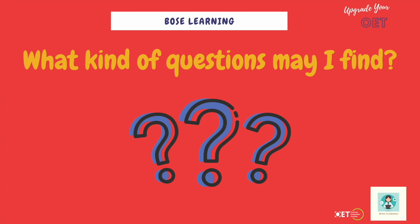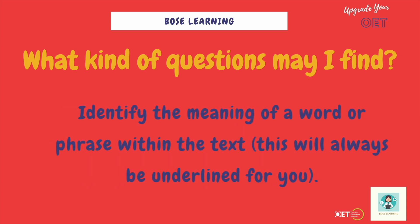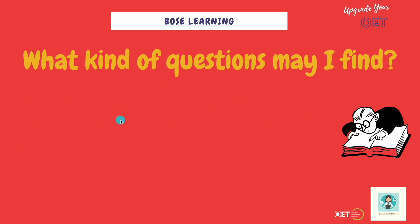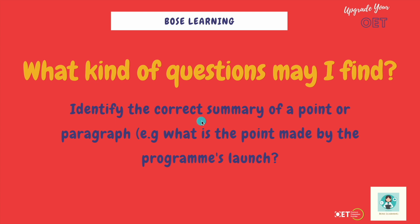What kind of questions might you find? You could be asked to identify the meaning of a word or phrase within the text — they'll always underline it and ask what it means, giving you four options. You may be asked to identify why the author said something — for example, was it to show agreement or doubt? Did the author feel discouraged or encouraged by a development? Or perhaps they were dismayed. They may also ask you to identify the correct summary of a point or paragraph — for example, what is the point made by the programme's launch? How can you summarise this idea?